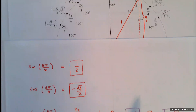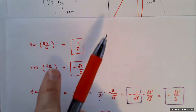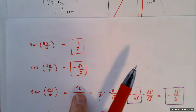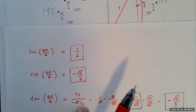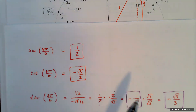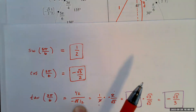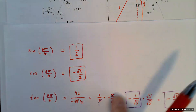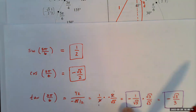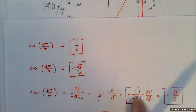For tangent, remember that tangent equals sine divided by cosine — y over x. So tangent of 5π/6 is (1/2) divided by (−√3/2). When dividing by a fraction, invert and multiply. The 2s cancel, leaving negative 1 over √3.